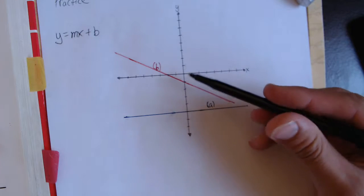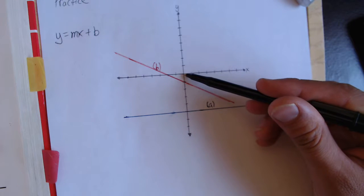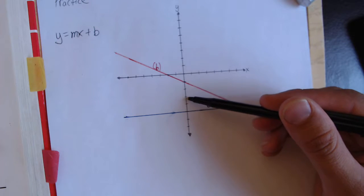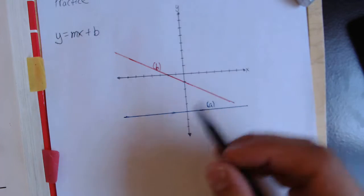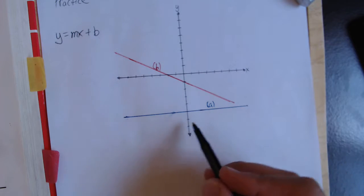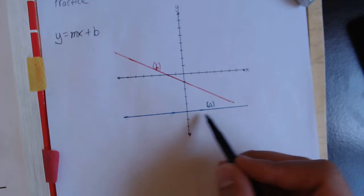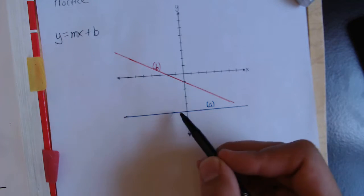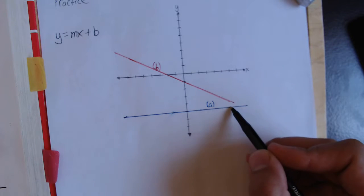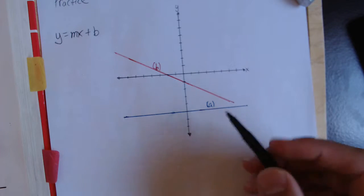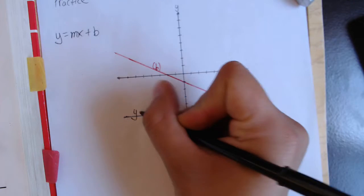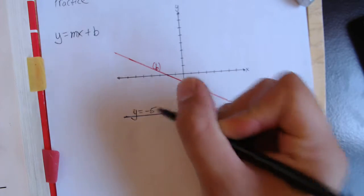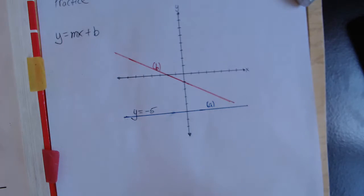So all we have to do is count how many spaces down line a is. So one, two, three, four, five. Negative five spaces down. So everywhere on this graph, the y value is going to be negative five. If we go over here, the y value is negative five. If we go over here, the y value is negative five. So the equation of line a is y equals negative five. That one's done. Really easy.